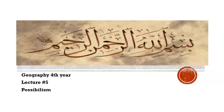Bismillah ar-Rahman ar-Rahim, Assalamualaikum dear students. Hope you all are fine. In our previous lectures we completed our first environmental theory, environmental determinism. Now the second part is possibilism, which is the opposite of environmental determinism. Today we will study possibilism.